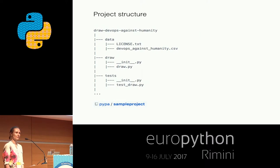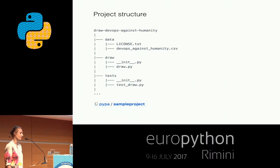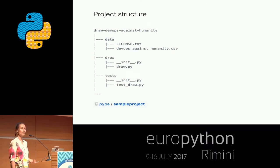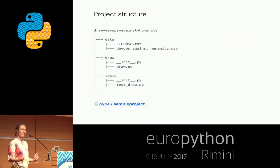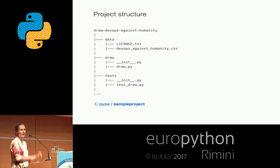The project structure. I want to find things in my project easily. I don't want to dig into each folder and file to find the right place to add a new function or a new test. What can we do about it? We can use a standard structure. In the case of Draw DevOps Against Humanity we have a data folder for data, a draw folder for the main project code, and a tests folder for tests. You may already know this structure because it is described by the Python packaging user guide and is also available in a sample project repository.